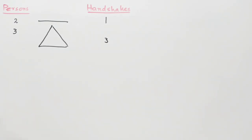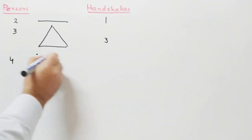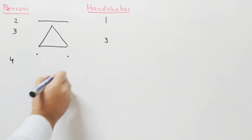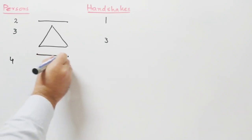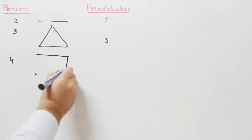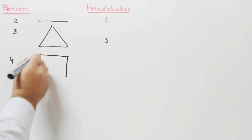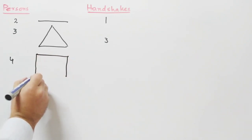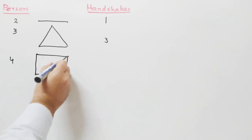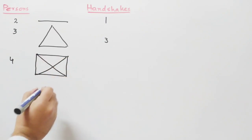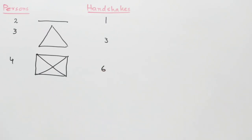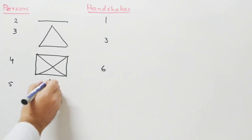Now if we have four persons, counting the handshakes: one, two, three, four, five, six. So there are six handshakes.